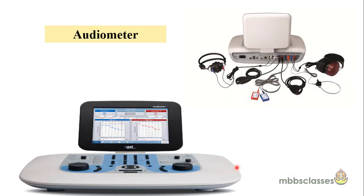This is a picture of an audiometer showing several color-coded cables — red for right ear and blue for left ear. There are also bone vibrators, again color coded with red for right ear and blue for left ear. When the patient gives a signal, it is plotted on a chart and printed on a paper called an audiogram.